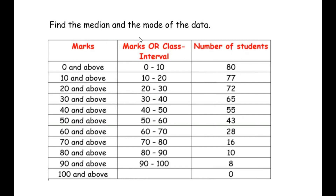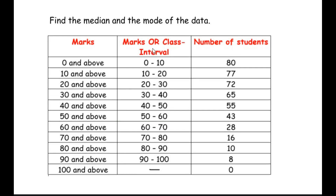A table is drawn where the marks and the number of students remain the same as in the question, but an additional column is included where the marks are changed into class interval format. So '0 and above' and '10 and above' becomes the class interval 0 to 10, '10 and above' to '20 and above' becomes 10 to 20, and so on. For '90 and above', since '100 and above' has 0 students, we keep it as 90 to 100.